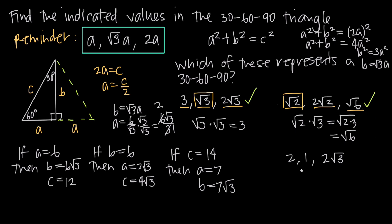For the last example, the three side lengths are 2, 1, and 2√3. The smallest value is 1, so that's side A. The hypotenuse has to be double that, which is 2 — that's in the set. The longer leg should be 1 times √3, which is just √3. But this doesn't match 2√3. Because these don't match, these three side lengths cannot represent a 30-60-90 triangle.